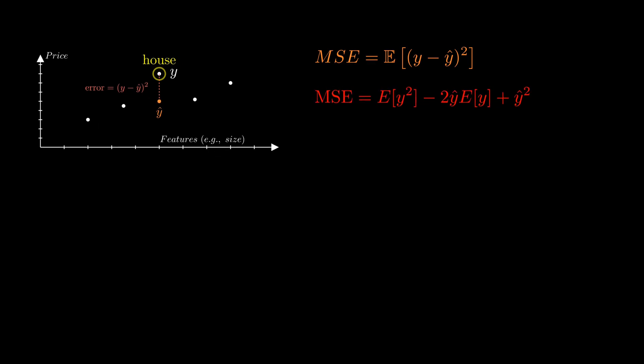Expanding that, we get the following equation. Now, here's a neat trick. Add zero in the form E of Y squared minus itself. It seems pointless, but watch what happens after rearranging the terms.